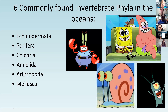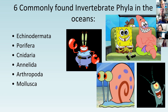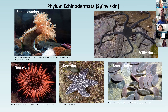I'm going to talk about six marine invertebrate phyla: first Echinodermata - those are animals like sea stars. Porifera includes sponges. Cnidaria are your jellies and anemones. Annelida are your worms. Arthropoda includes crabs and planktonic animals like copepods and isopods. And Mollusca includes your snails and octopus.